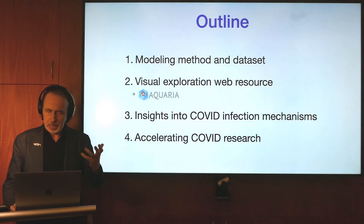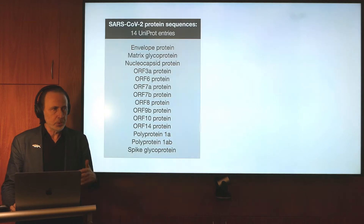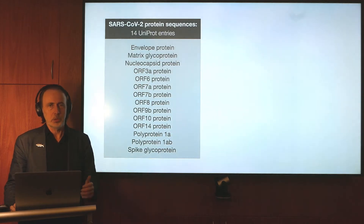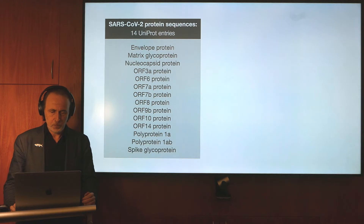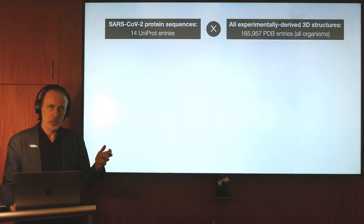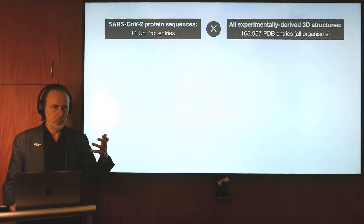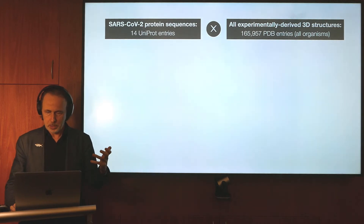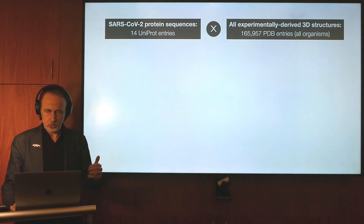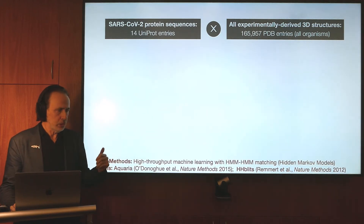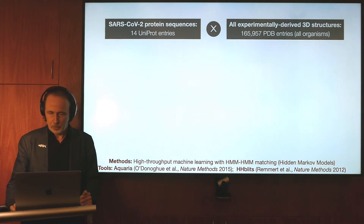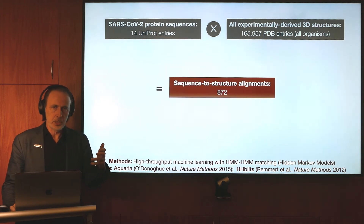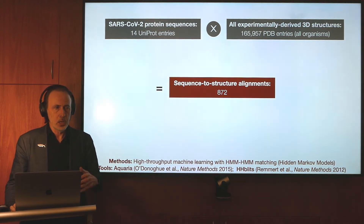Our analysis began with the 14 protein sequences given by UniProt that comprise the viral proteome. We took each of these sequences and attempted to match every part of those sequences against all the available protein structures across all organisms using machine learning methods. This generated a data set of 872 sequence-structure alignments.